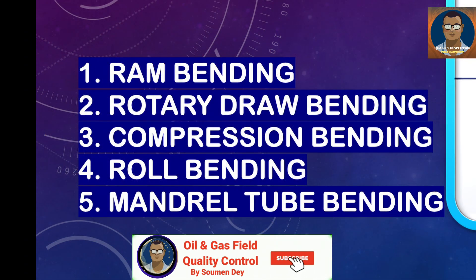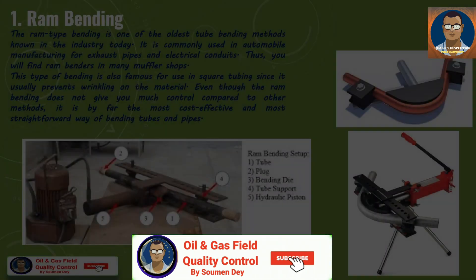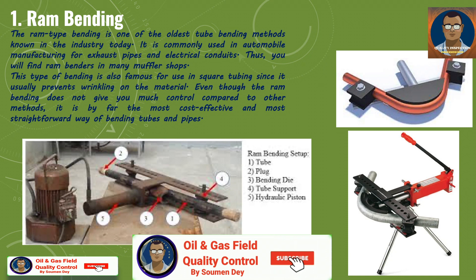There are generally five different methods of tube bending or pipe bending that can also be classified according to their complexity. Each process achieves precision bending in order to make pipe suitable for the application. These five methods are: ram bending, rotary draw bending, compression bending, roll bending, and mandrel tube bending. As the name suggests, ram-type bending is one of the oldest tube bending methods known in the industry today.